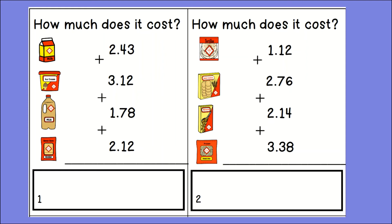Now let's practice. Take out your calculator and figure out the total cost for these items on the left side: a pint of milk at two dollars and forty-three cents, ice cream at three dollars and twelve cents, a gallon of milk at one dollar and seventy-eight cents, and cheddar cheese at two dollars and twelve cents. In your calculator, start by adding two point four-three plus three point one-two. Make sure to keep track of the decimal point — do not treat two forty-three as two hundred forty-three, as that would give incorrect values.